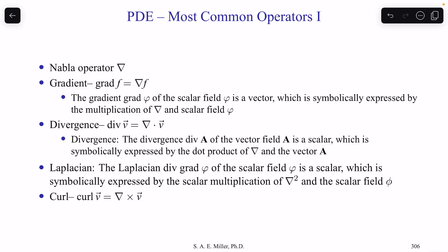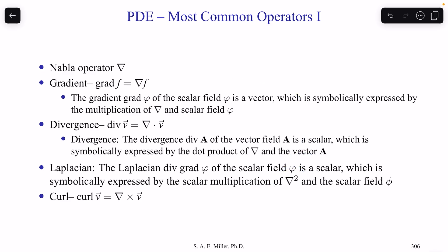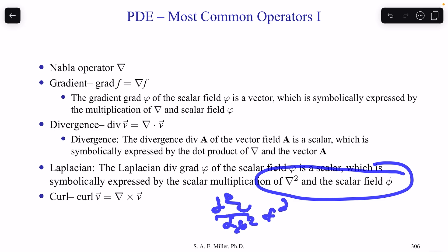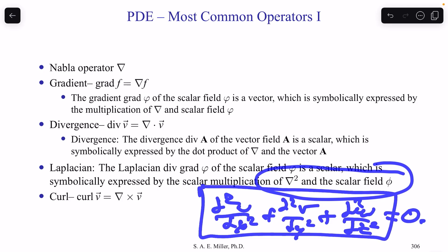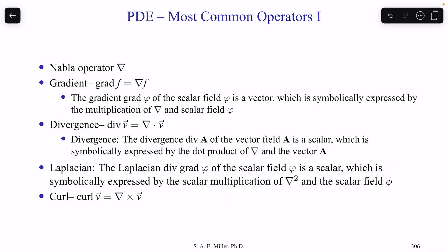If you see the Laplacian operator — the divergence of the gradient of scalar field ψ — that's a scalar. It's expressed by the scalar multiplication of NABLA with itself, written as NABLA superscript 2. That would be ∂²u/∂x² + ∂²v/∂y² + ∂²w/∂z² = 0. This operator with the second derivatives in x, y, and z operating on u is the Laplacian operator acting on a scalar field.